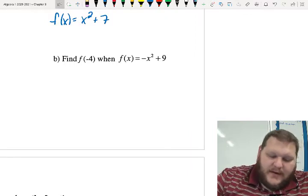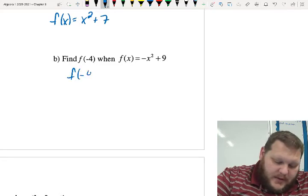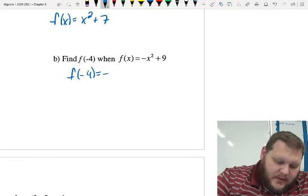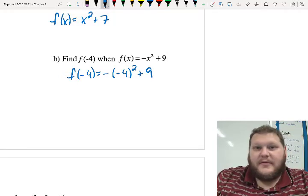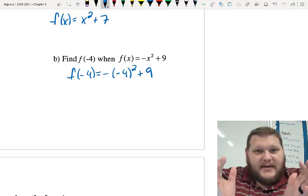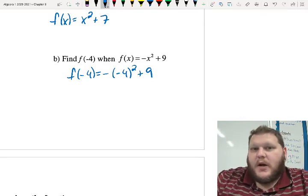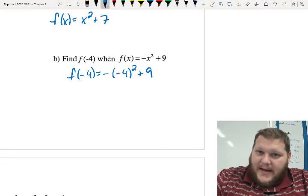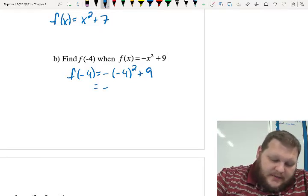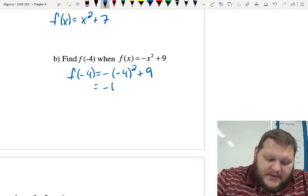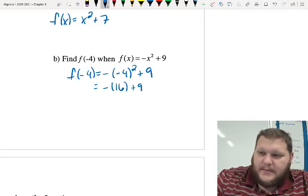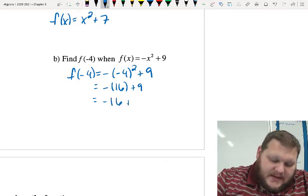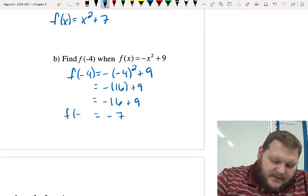For part b, again, just getting some more practice in here. If we're evaluating f of negative 4, that means we're just simply plugging in negative 4 in for my equation, or, sorry, in for my x value. Here, be careful because of the way that my numbers are written. It's negative x squared, not parenthesis negative x to the second power. So, here, I have to square my number first, and then that negative gets applied afterwards. So, here, negative, well, negative 4 squared, negative 4 times negative 4 is a positive 16 plus 9. So, here, we actually still have a negative 16 plus 9.